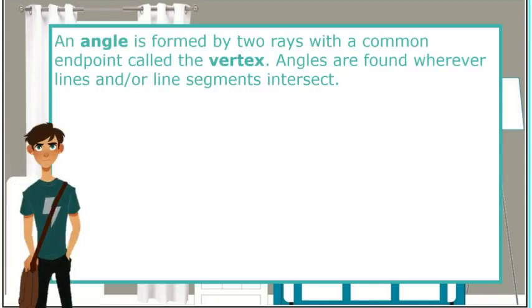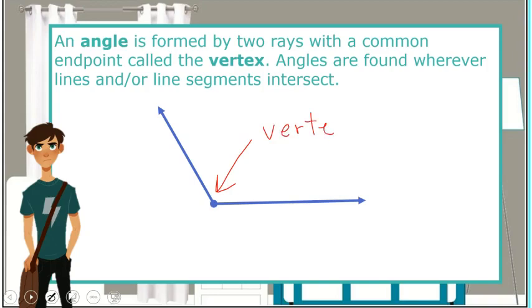An angle is formed by two rays with a common endpoint called the vertex. Angles are found wherever lines and or line segments intersect.